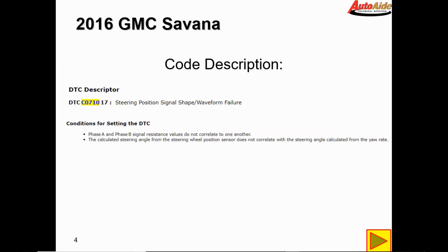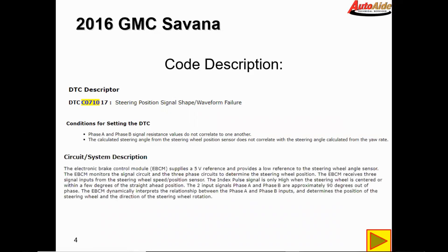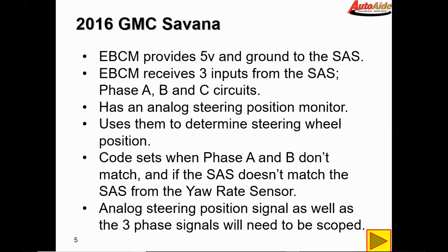I'm not really sure what phase A and B signal is, so I think we should probably have a look at the circuit description to see exactly how this works. The EBCM provides a 5 volt reference and ground to the steering angle sensor, and the EBCM receives three inputs from the steering angle sensor as well: phase A, B, and C circuits. It also has an analog steering position monitor, which is why we have the 5 volts and ground going there.